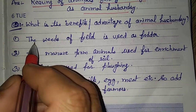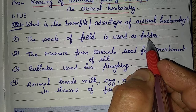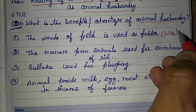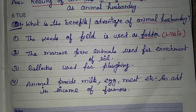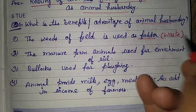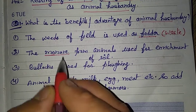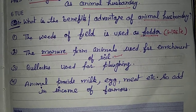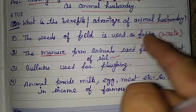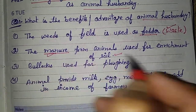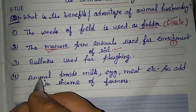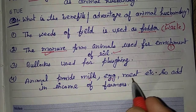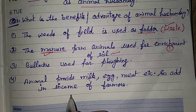When you go to the field and remove the weeds — the weeds of the field are used as fodder for the animals. So the waste from the field is used as fodder. As a result, when you feed the animals, they produce manure. The manure from the animals is used for enrichment of the soil. So your agricultural waste is converted into manure. Second benefit: animals provide milk, eggs, and meat — so this adds to the income of the farmer.